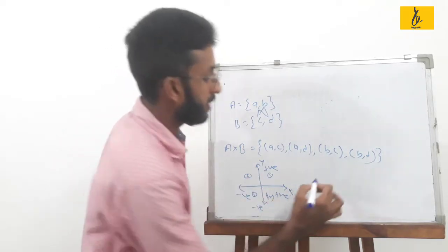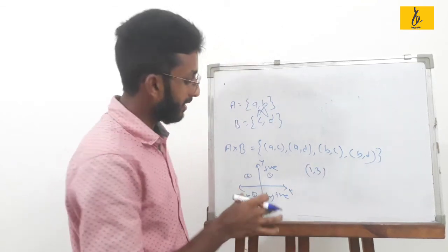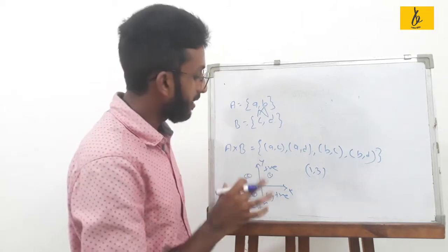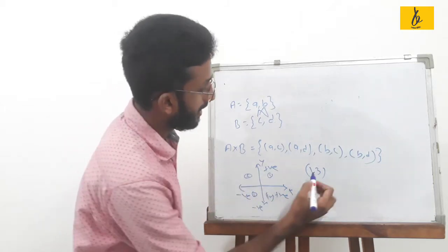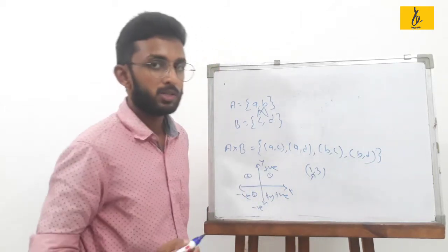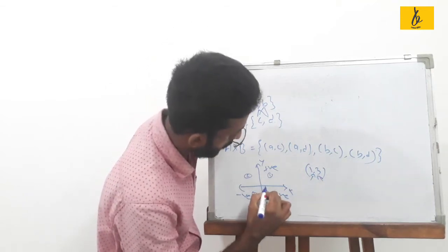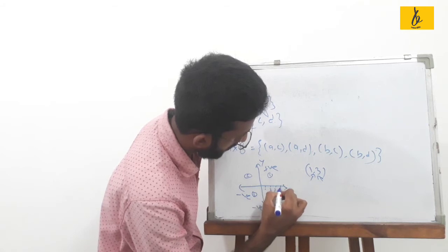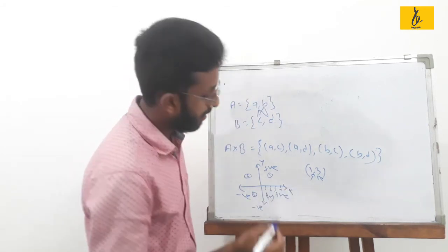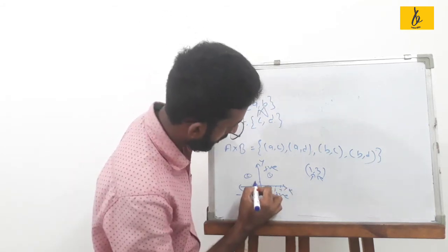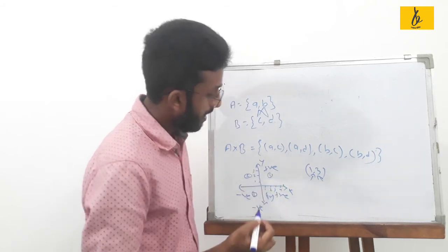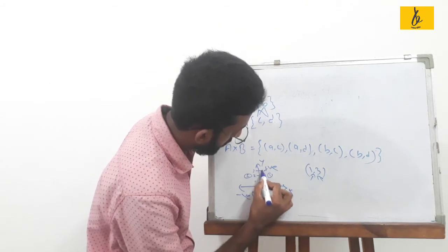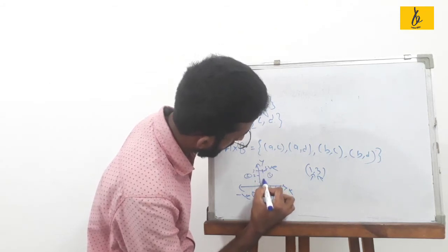For example, the pair is (1, 3). On the coordinate system, we go to x equals 1 and y equals 3. Counting along the x axis: 1, 2, 3, 4. We denote x=1, y=3, and the point is plotted here.